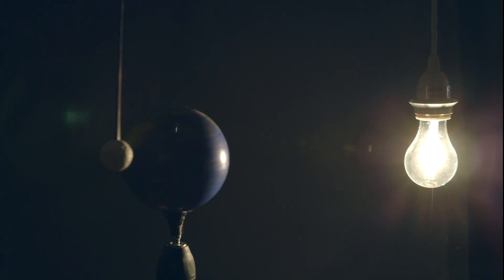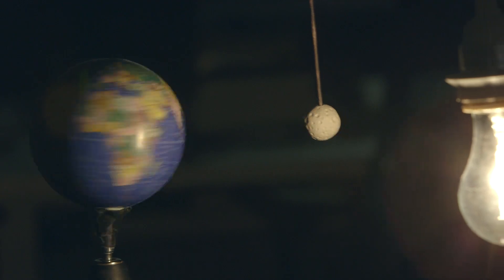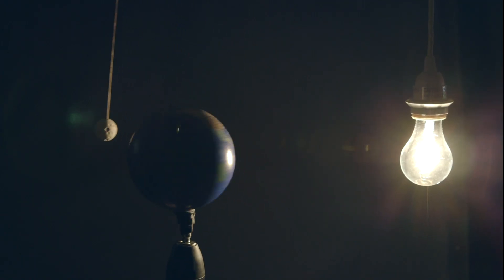A solar eclipse happens when the moon's shadow falls somewhere on the surface of Earth. And a lunar eclipse is the opposite, when the Earth's shadow falls across the moon.